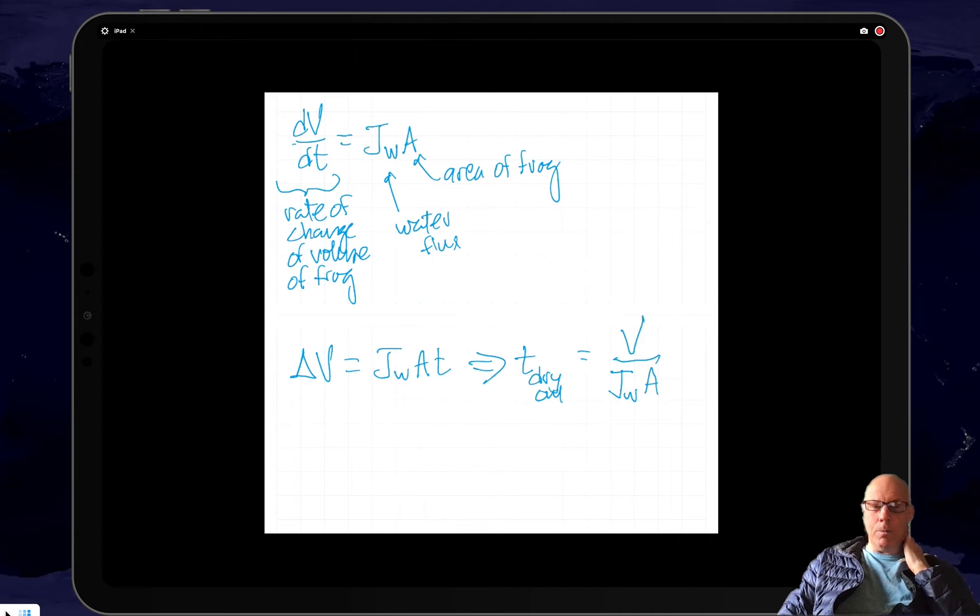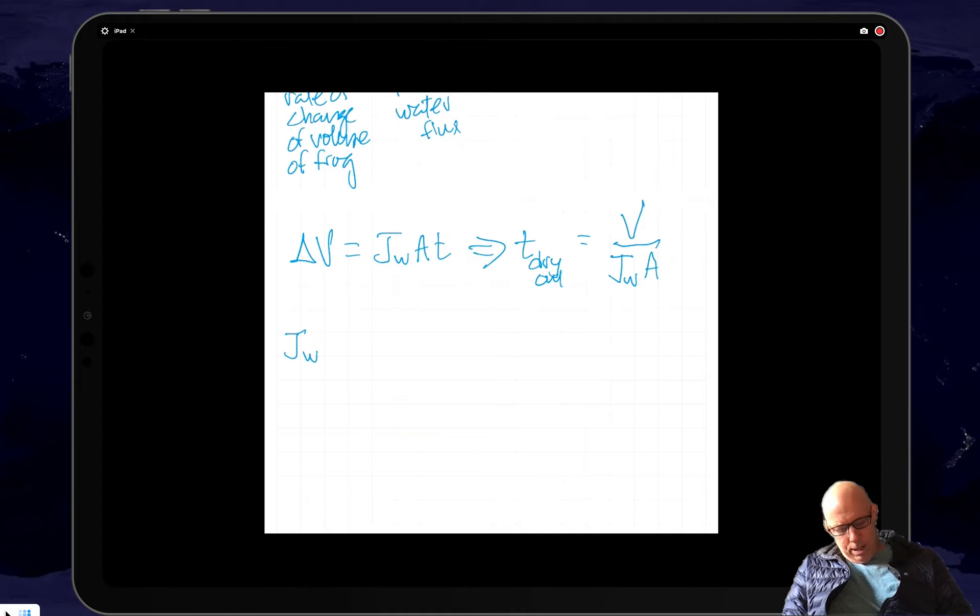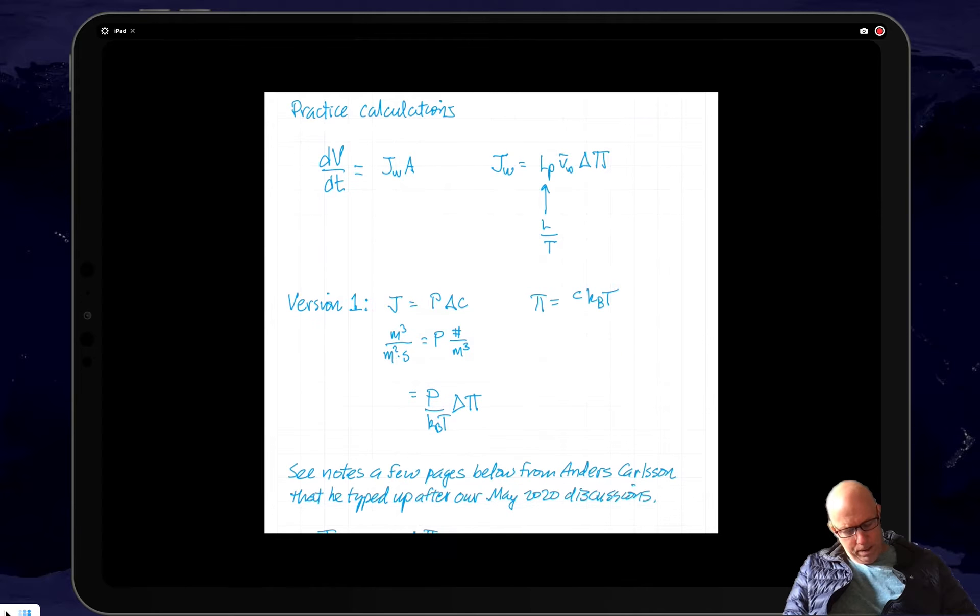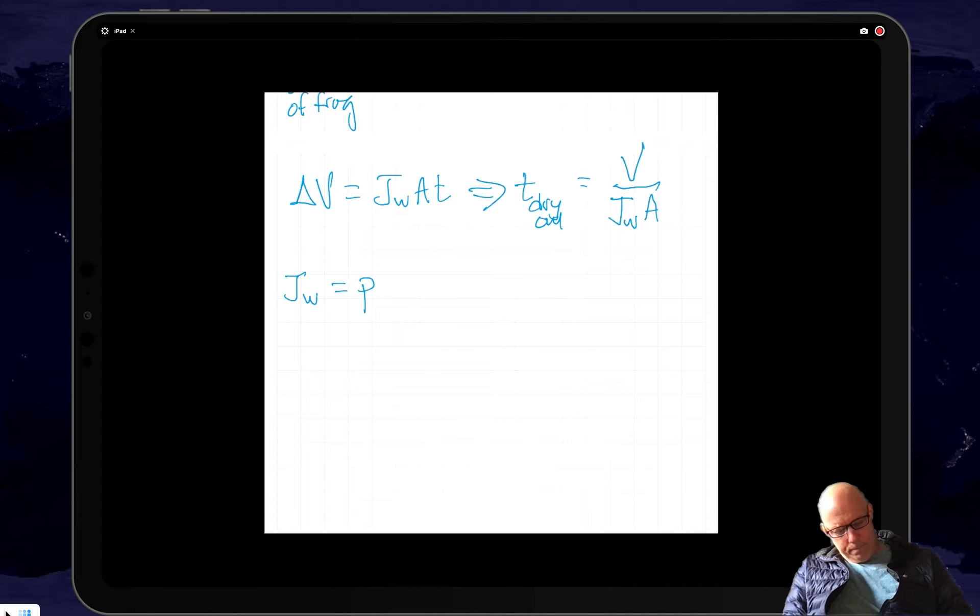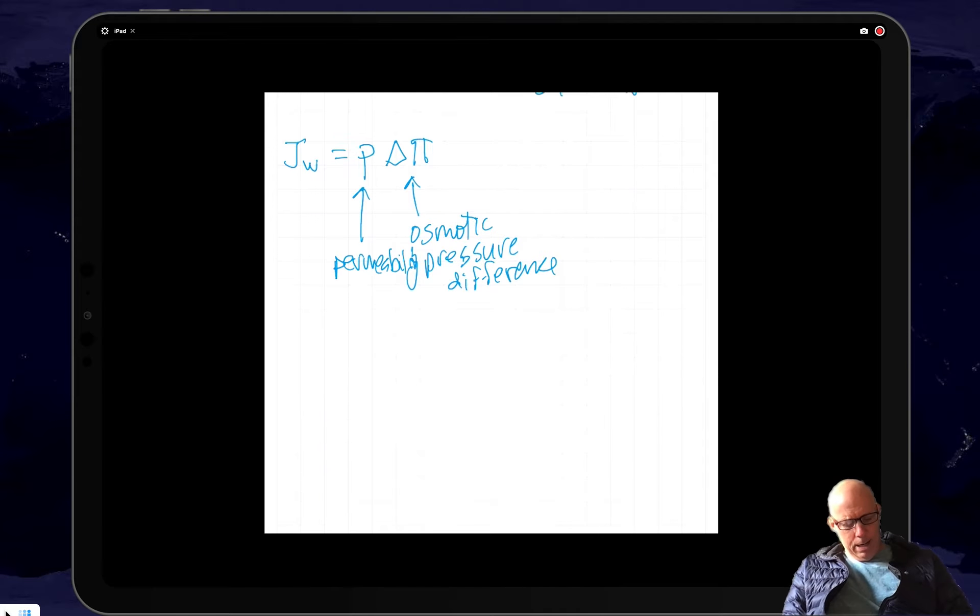That's basically the estimate that we need to make. The time to dry out is given by the volume of the thing that's drying out, and then divided by the flux. You can see that the larger the flux, the faster the drying out will occur. So now we want to appeal to the linear transport laws. I'm going to write this. This is the osmotic pressure difference. And then this thing is a permeability.